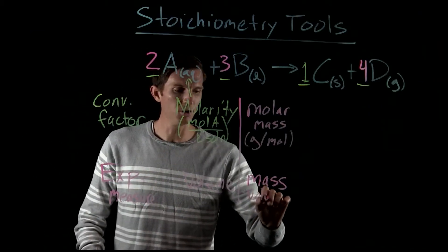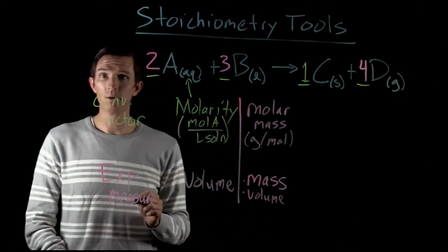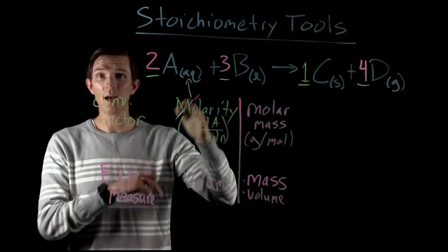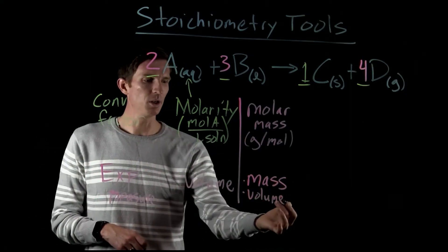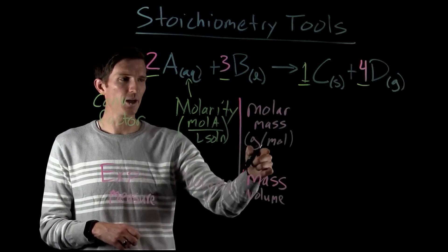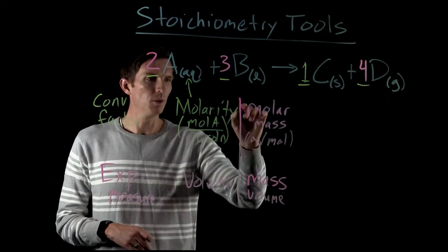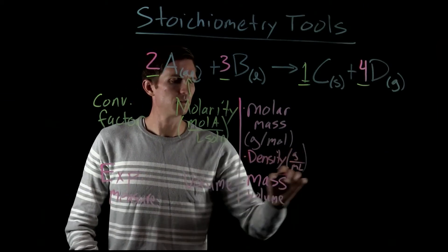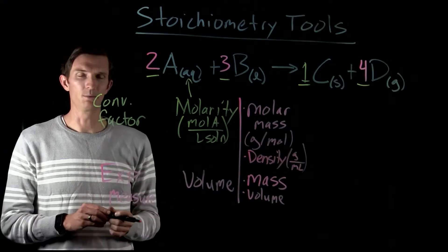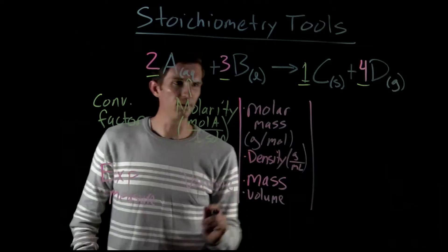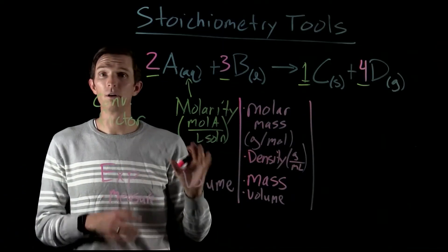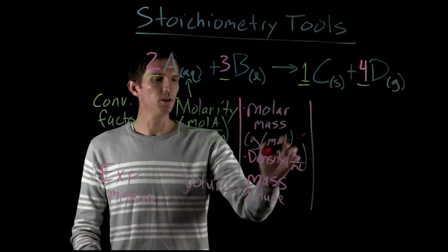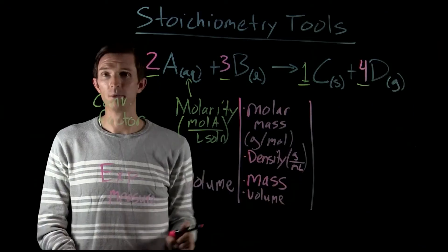If we were to measure the volume of that pure liquid — and again, this is a pure liquid, not a solution, so all of that volume is that liquid — then in order to get to the number of moles, we've got to go through our molar mass. We could also use our density, which relates volume and mass, typically given in grams per milliliter. So for a pure liquid, we can find the number of moles from mass using molar mass, or from volume using density and then molar mass.